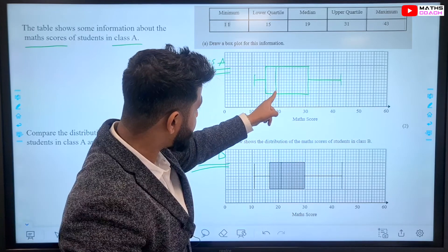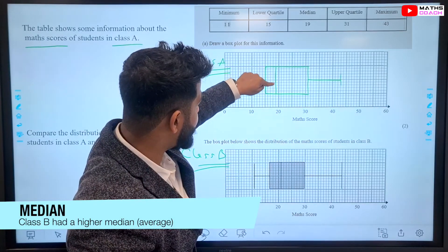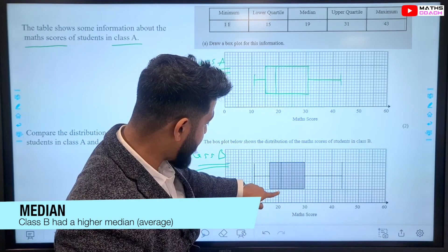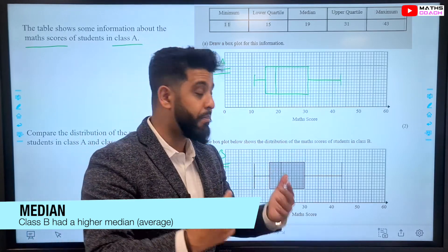if you look at the median, the average, the 50% mark, for Class A, it was 19, whereas Class B, it was 21. So, on average, Class B students did better.